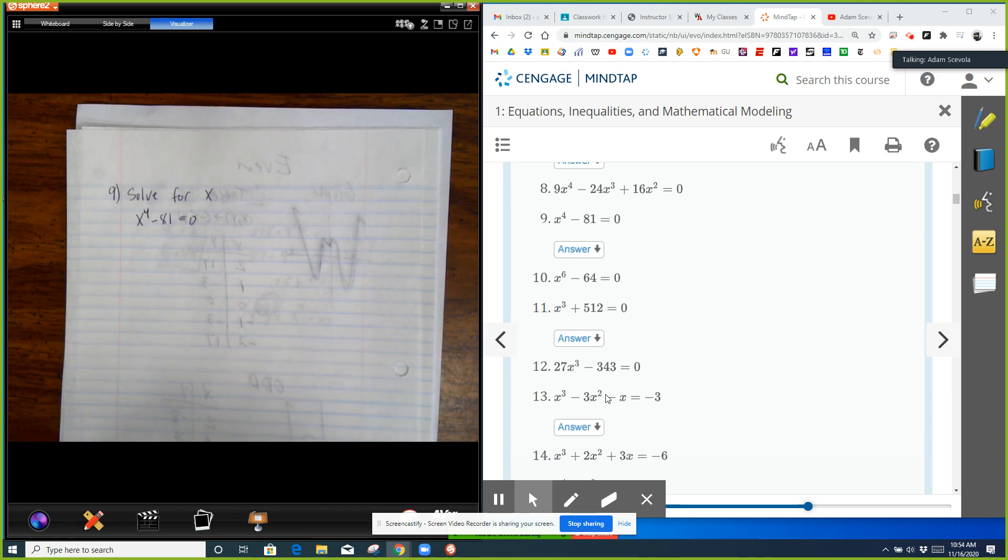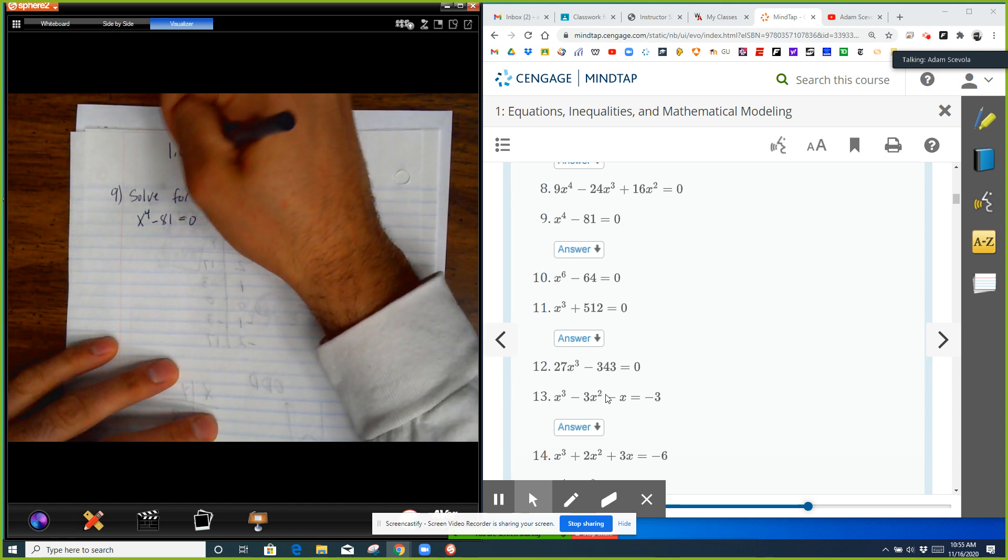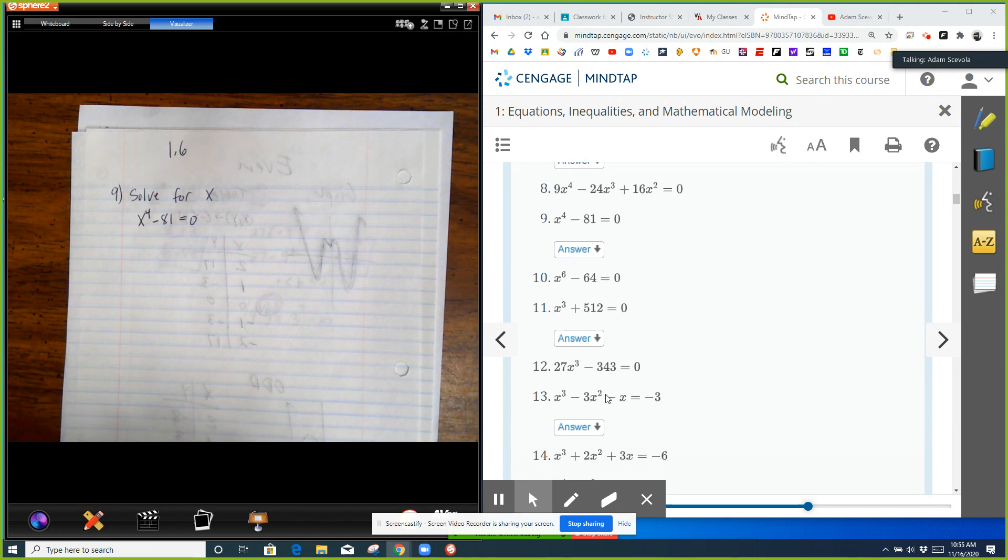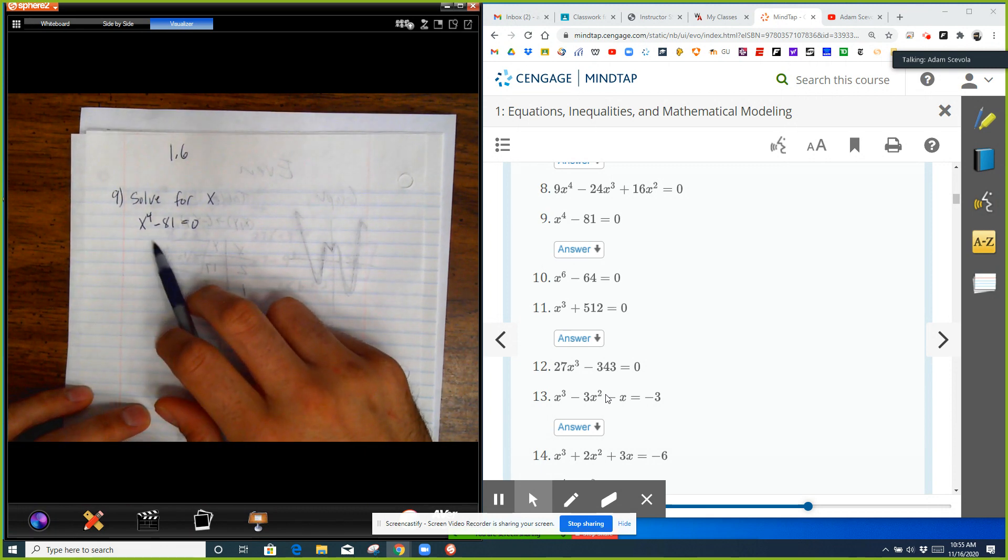Number nine from the 1.6 textbook section. We need to solve for x, and we have a polynomial equation: x to the fourth minus 81 equals zero.